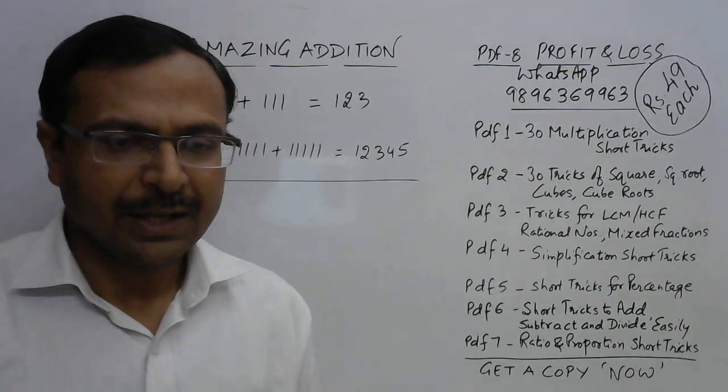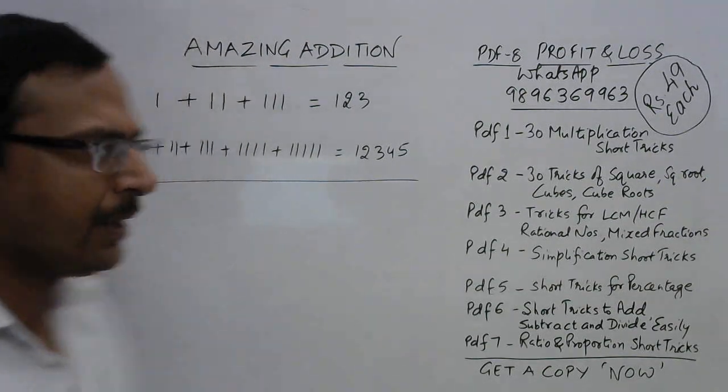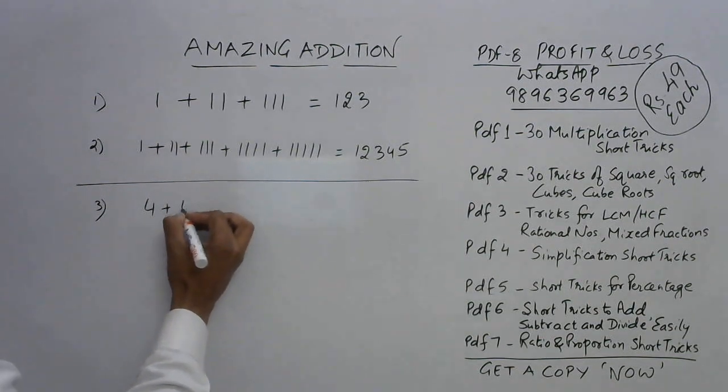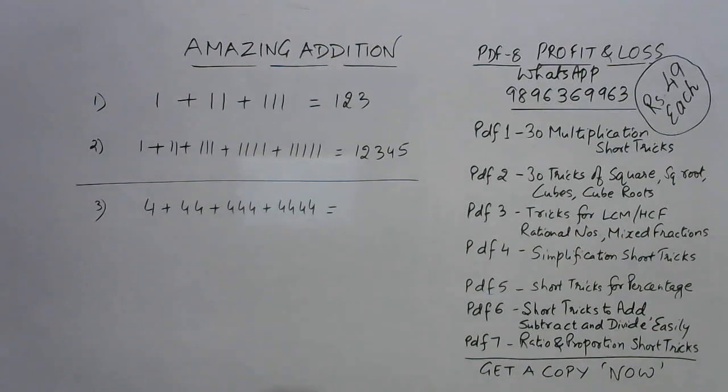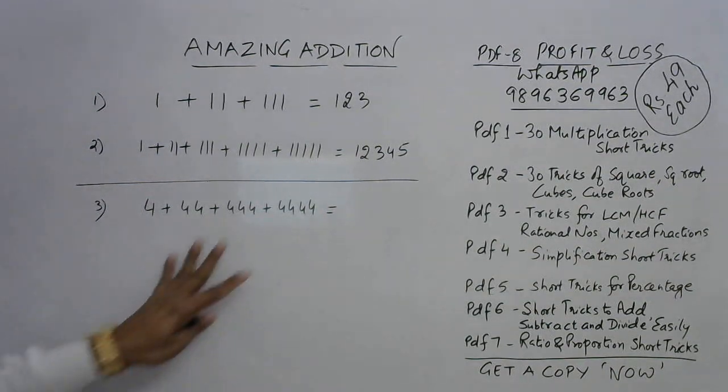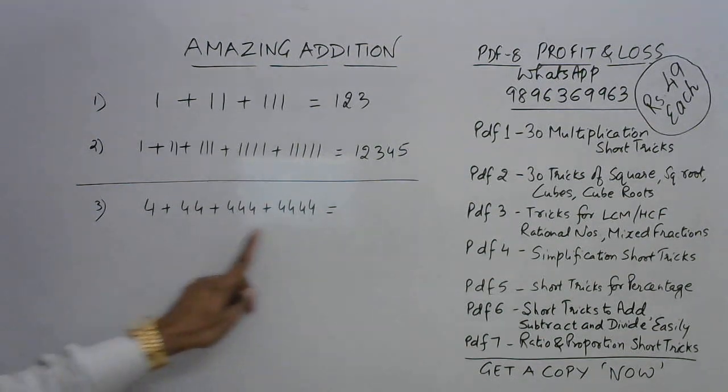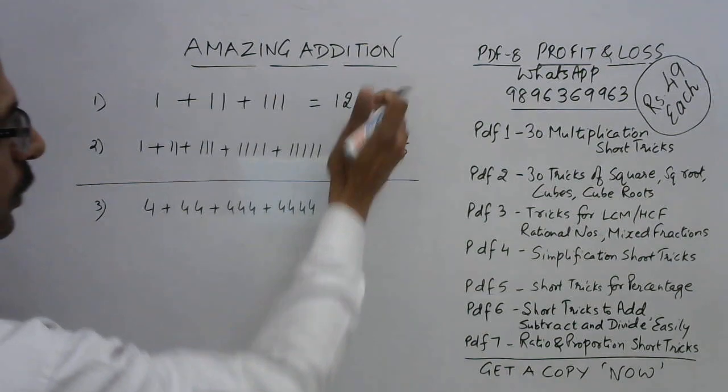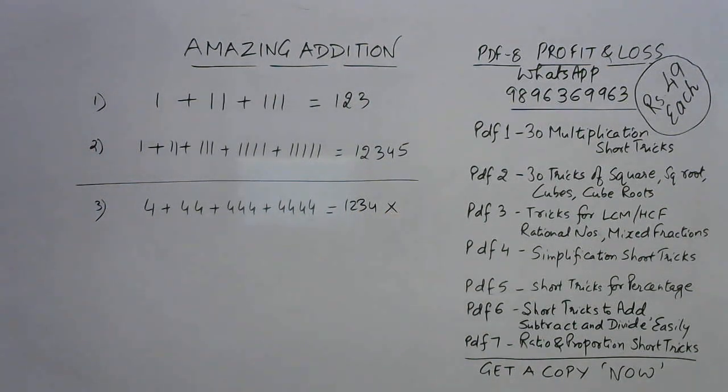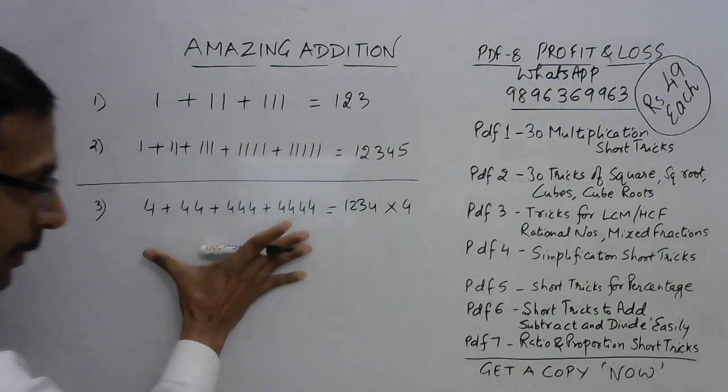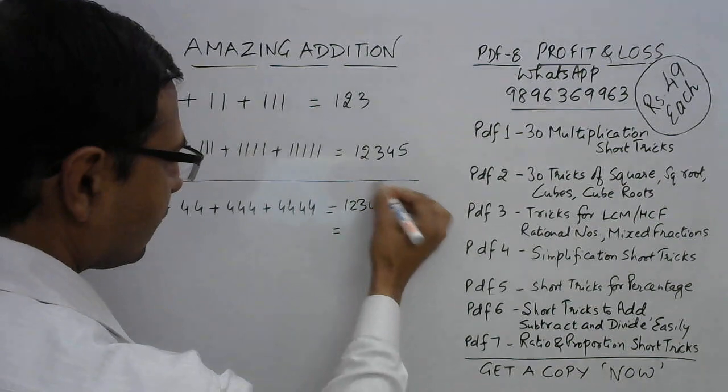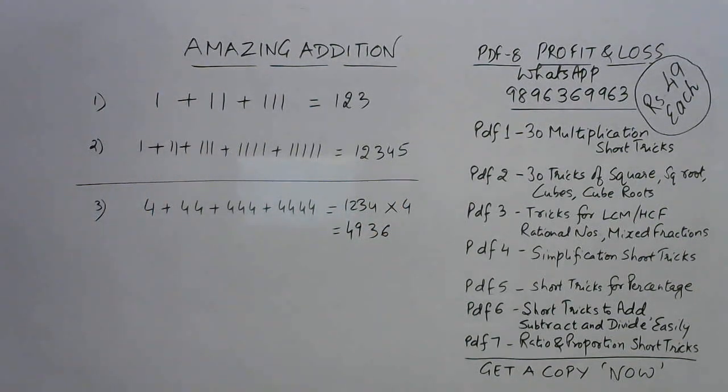Now come to some different numbers. Let's have numbers other than 1. Suppose in the third problem you have 444 + 44 + 4. In this case the generalized trick of ones will help in getting the answer. How many numbers are there here? There are four numbers, all fours. Four numbers means four ones gives you 1234. Just multiply that by the number which is repeated here, that is 4. This will give you the answer: 4936.